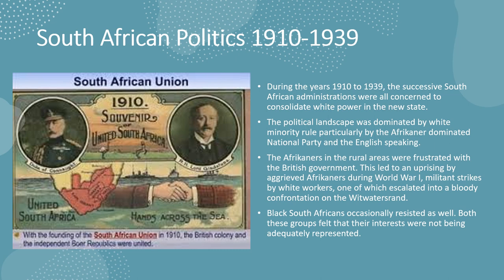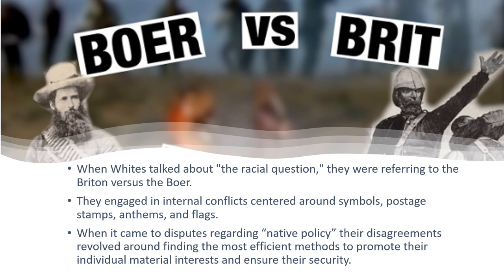Black South Africans occasionally resisted as well, but these groups felt their interests were not being adequately represented. When whites talked about the racial question, they were referring to the British versus the Boer — the ethnic cleavage between Afrikaners and English-speaking white South Africans. They engaged in internal conflict centered around symbols, postage stamps, anthems, and flags. When it came to disputes regarding native policy, their disagreements revolved around finding the most efficient methods to promote their individual and material interests and ensure their security.